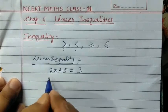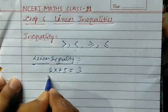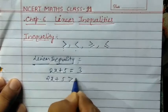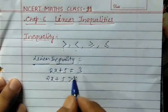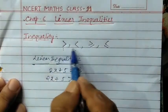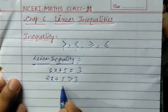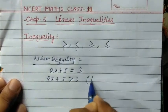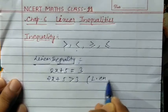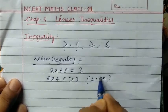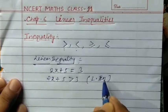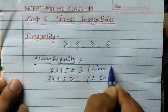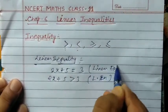Now, if we use in this expression 2x + 5 a sign like greater than or equal to 3, or any inequality sign, then this becomes a Linear Inequality. So this is a Linear Inequality, and similarly other expressions with inequality signs are also Linear Inequalities.